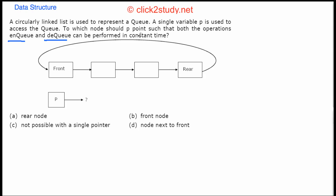In a circularly linked list, everything goes round — the pointer has to come back to the front. In a queue, there is a front pointer and a rear pointer. The first entry is pointed to by the front pointer, and this goes on to the last entry.